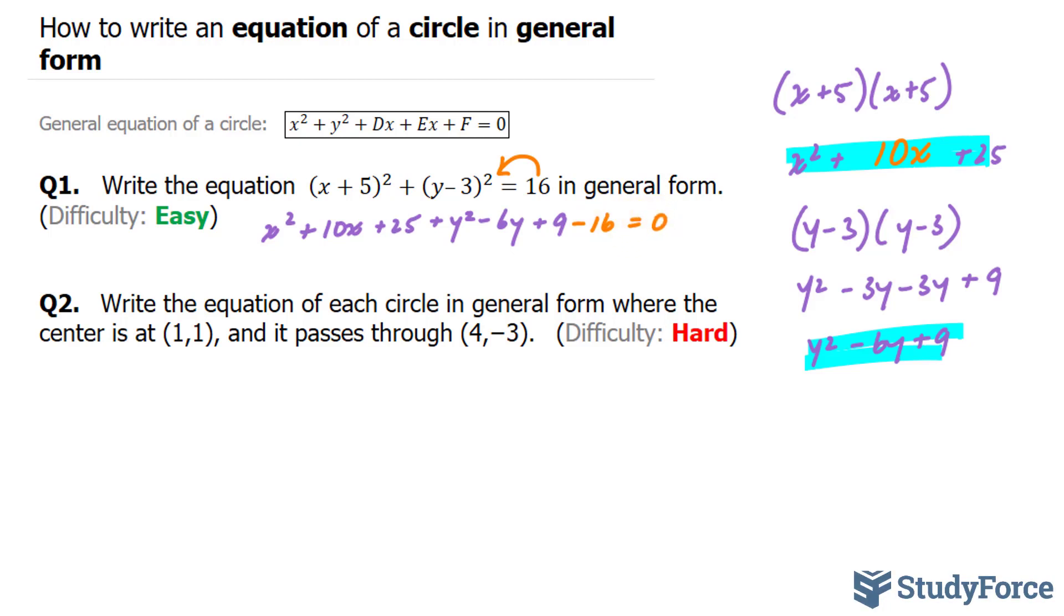Now we have three more like terms. What is 25 + 9 - 16? 25 plus 9 is 34. 34 minus 16 is 18. Our final equation should be x² + y² + 10x - 6y + 18. I'm going to highlight that for clarity. And we're going to move on to question 2.